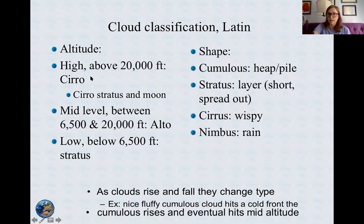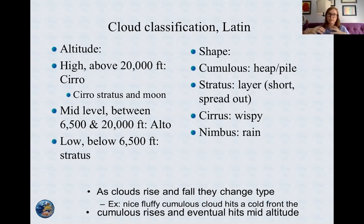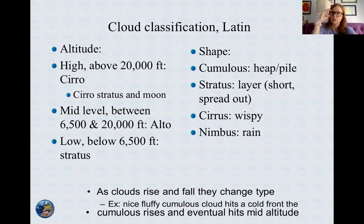Clouds are also classified by their height. If you're high up in the atmosphere — 20,000 feet or above — we're talking about a cirro cloud. Cirro means high in Latin. Mid-level clouds are alto. If you've ever been in choir, you know alto is the middle — so alto means mid in Latin. And then low-level clouds are stratus — layered and low, down around 5,000 feet.